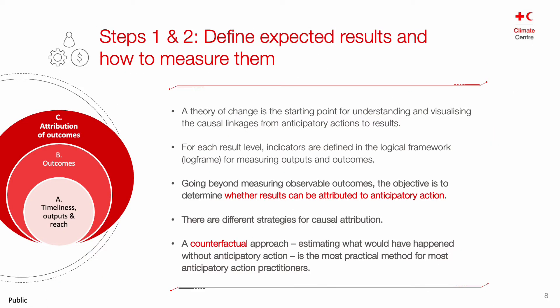Now that we are clear about what results we want to measure, the question becomes how we measure them and what type of evidence we need. Part of the anticipatory action narrative is that we want to act sooner than we normally would. Therefore, monitoring the timeliness of our actions in relation to the forecast trigger and the peak impact of the hazard is very important, as well as tracking how many people are reached and with what outputs. We also want to measure outcomes in terms of protecting lives and livelihoods, and to understand whether observable results are attributable to the anticipatory actions.